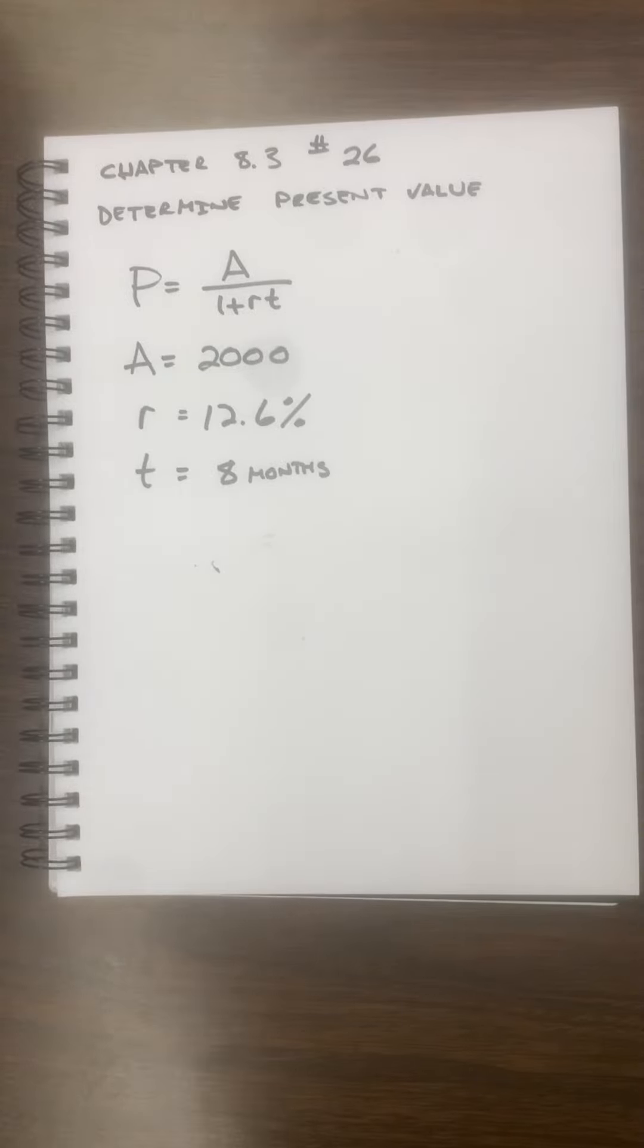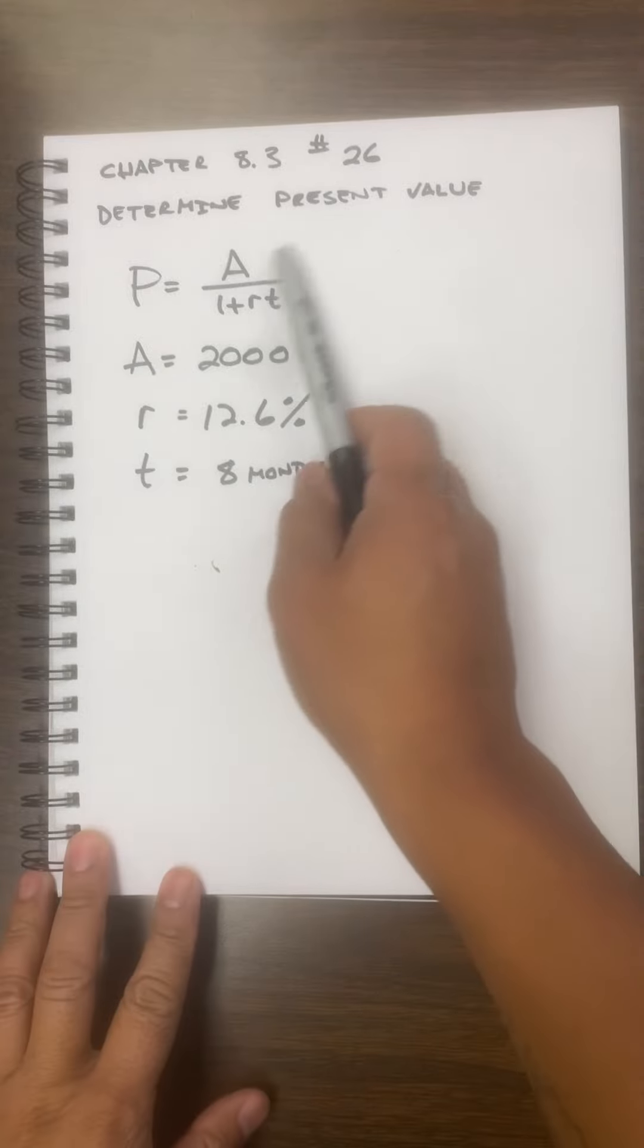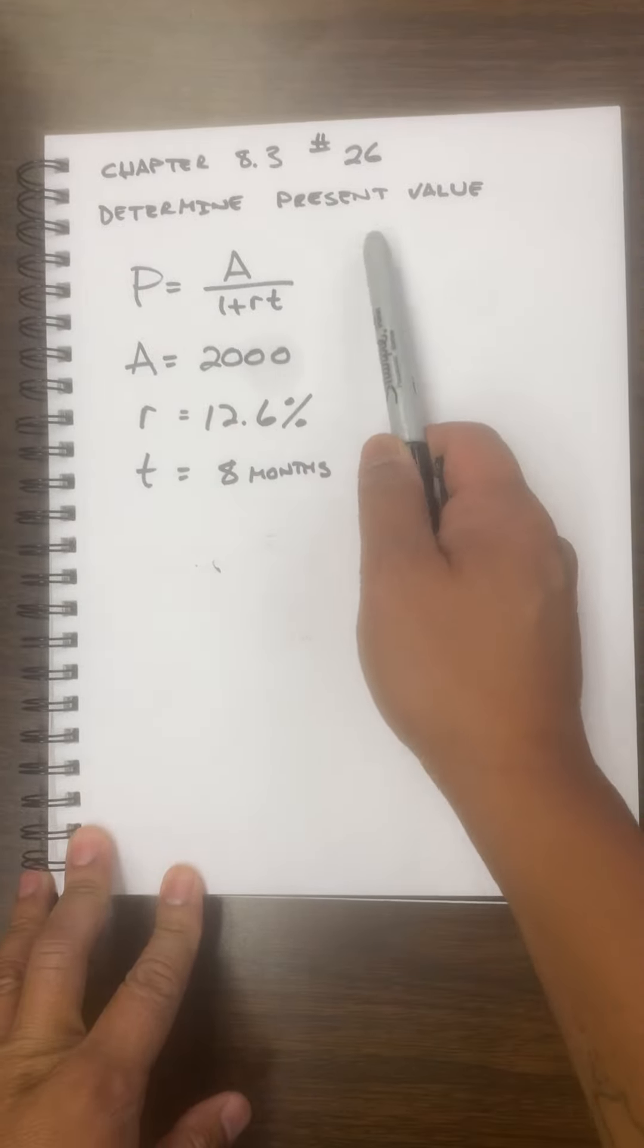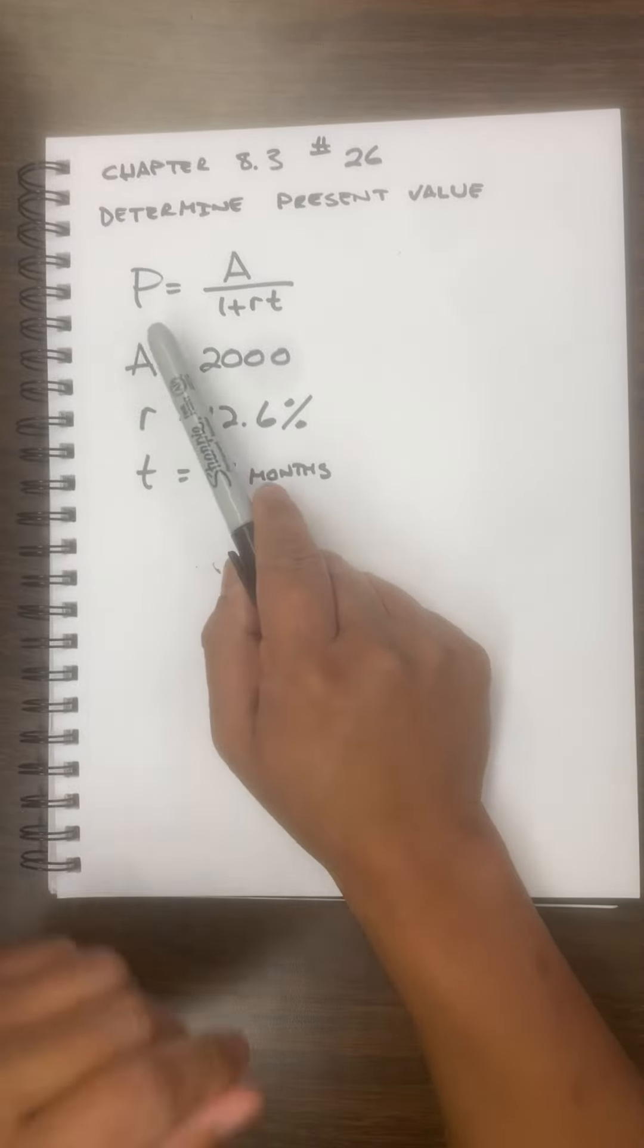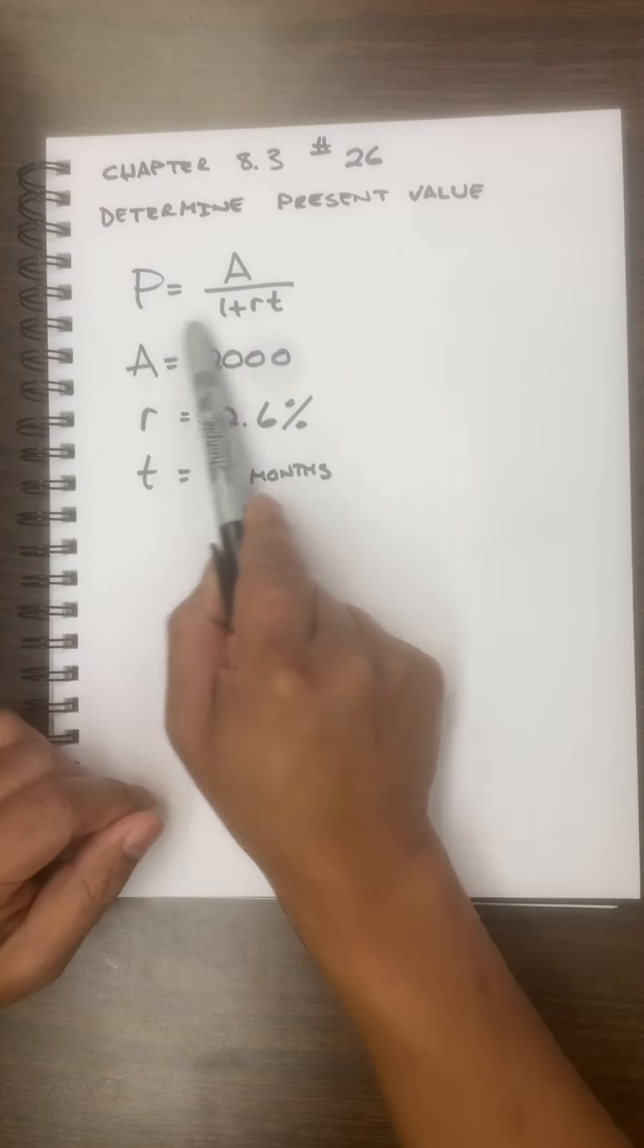Hey friends, this is Chapter 8.3 number 26. In the directions it says to determine the present value. Present value is another way of saying the principal value, so I'm going to use this formula.